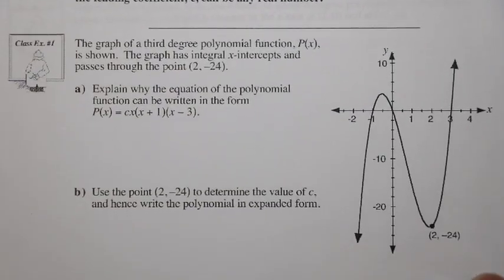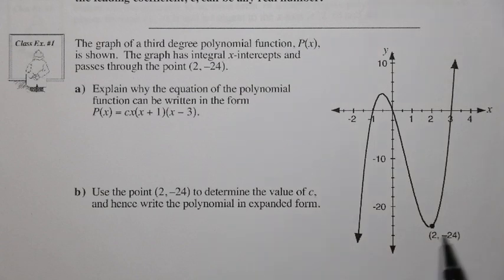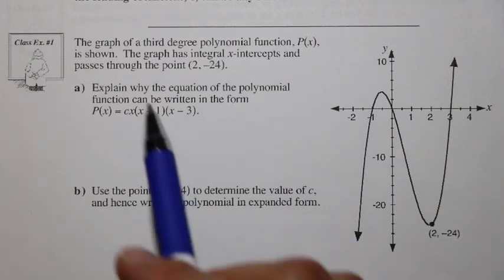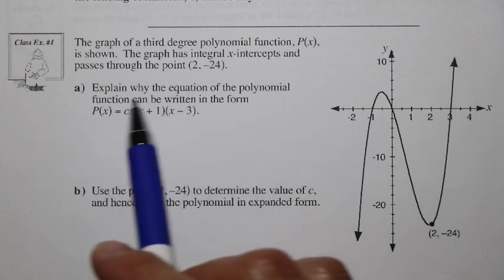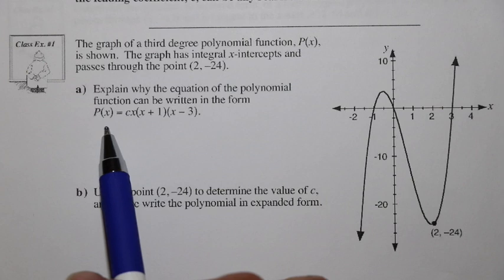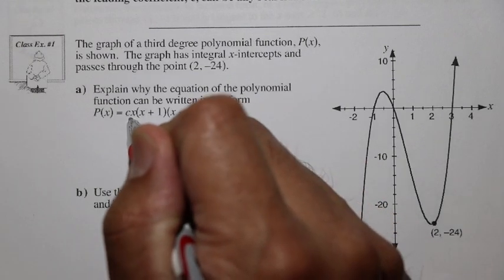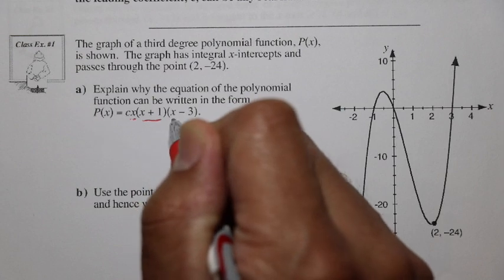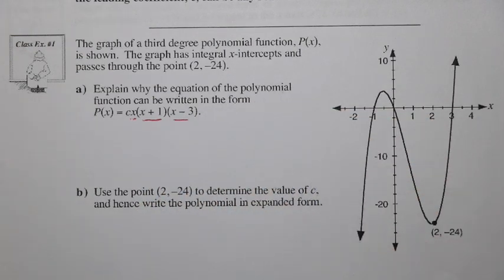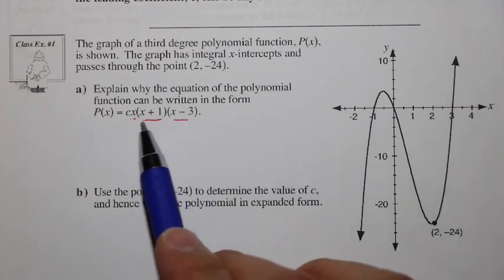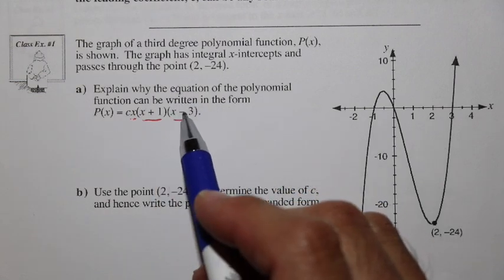Let's look at class example 1, where we start dealing with c values that could be anything other than 1 or negative 1. The graph shows a third degree polynomial function p(x) with integer x-intercepts, passing through the point (2, -24). We need to explain why the equation can be written as p(x) = c·x(x+1)(x-3). We notice a leading coefficient c and three factors — since it's a third degree polynomial with three distinct factors, the unique factorization theorem confirms this form.